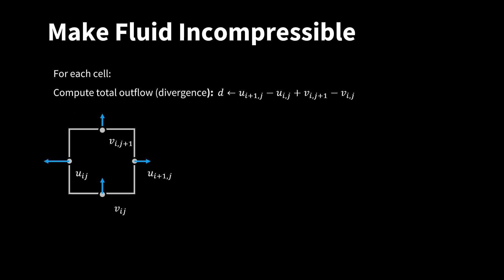The second step is projection. Here we make the fluid incompressible. For this, we run through all the cells in the grid. For each cell, we compute the total outflow, which is also called the divergence. This is the formula to compute this quantity. In this example here, the total outflow or divergence is positive. There is more fluid flowing out of the cell than into the cell. So we have too much outflow.